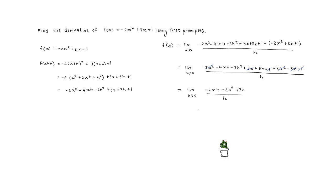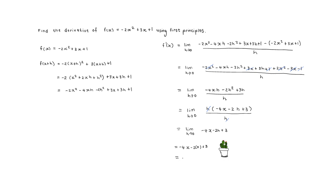We're left with the limit as h tends to zero of minus 4xh minus 2h squared plus 3h, all divided by h. Remember: don't drop the limit notation until you can do direct substitution without division by zero. Pulling out the common factor h gives h times (minus 4x minus 2h plus 3), divided by h. The h cancels, giving the limit as h tends to zero of minus 4x minus 2h plus 3. Substituting h equals 0: f prime of x equals minus 4x plus 3.